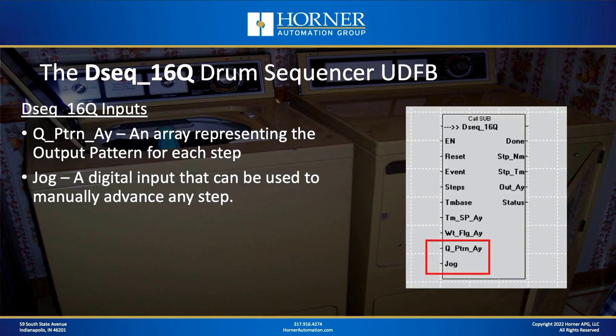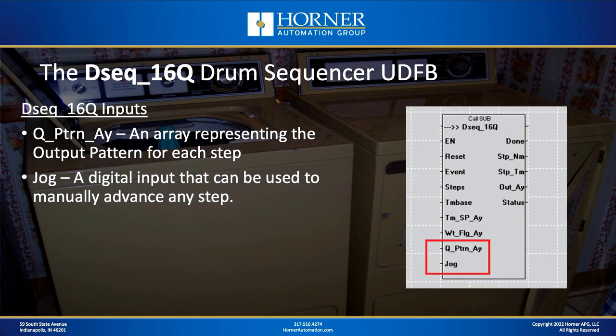Next is the output pattern array. For every step in your sequence — up to 16 steps — you have an output pattern that the drum sequencer sets its outputs to. That means 16 bits per step for setting each of the 16 outputs. So it's an array of 16 integers, where the least significant bit in each integer is the first output and the most significant bit is the 16th output. Finally, there's a jog input — a digital input that manually advances past any step when triggered with an off-to-on transition, regardless of how the step is configured to normally advance.